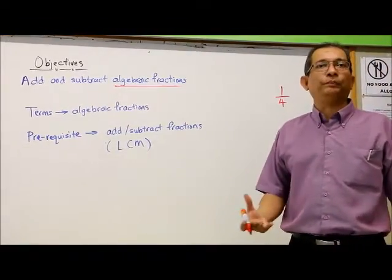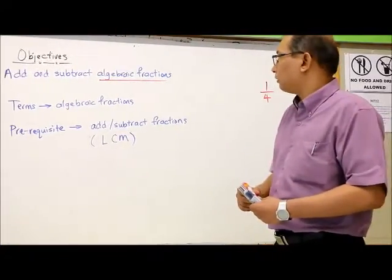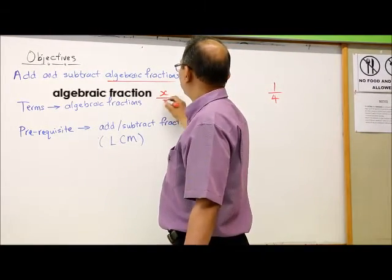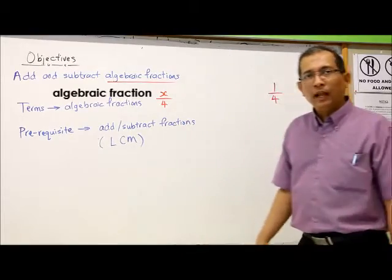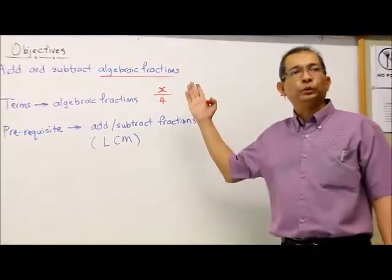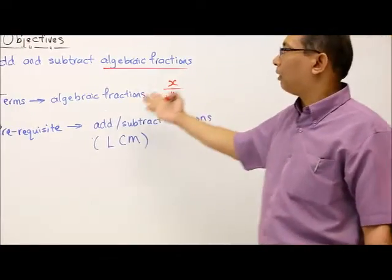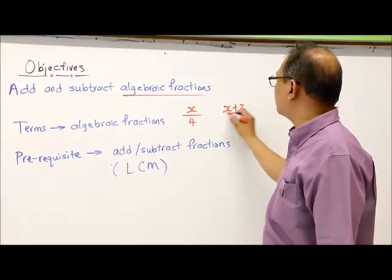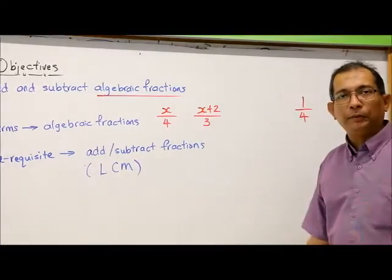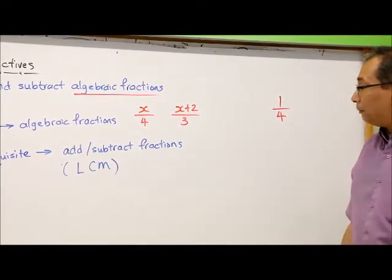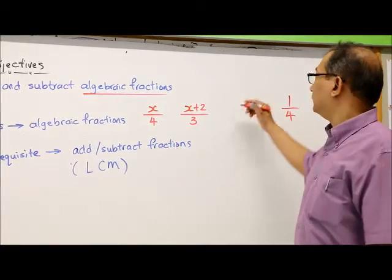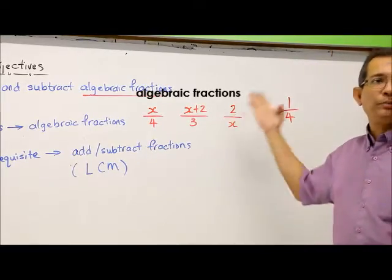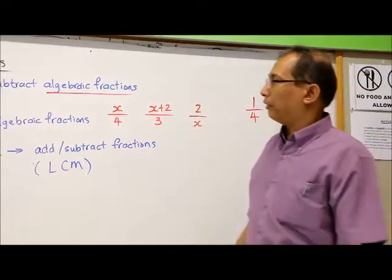A fraction involves numerator divided by denominator. For instance, this is a fraction, 1 quarter. So whenever we talk about algebraic fractions, either one or both of the numerator and/or denominator is expressed as an unknown value. For instance, x. So when we talk about algebraic fractions, maybe I'll give you some examples. For instance, x over 4. Now this is a fraction and at the same time the numerator is an unknown.